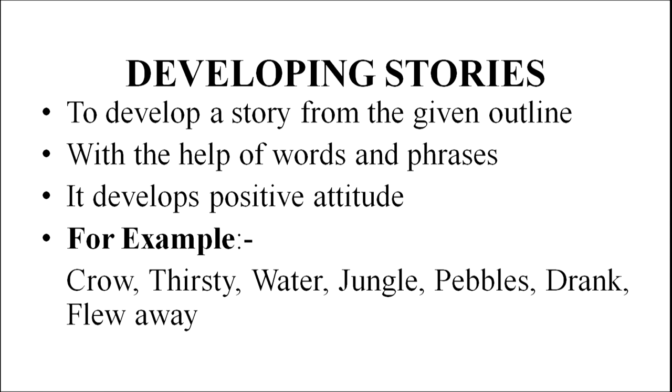The second method is developing stories, where a teacher gives a few important words to the students. For example, for the thirsty crow story, words like crow, thirsty, water, jungle, pebbles, drank, flew away are given. Students have to develop the story from the given outline or with the help of words or phrases given by the teacher. The main aim is it develops a positive attitude — students learn how to join sentences, develop grammatical rules, understand conjunctions, and make proper meaningful sentences in correct sequence.